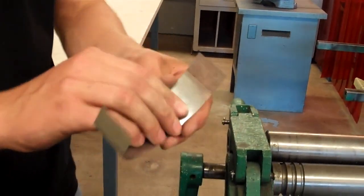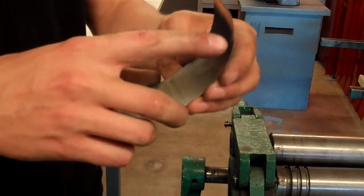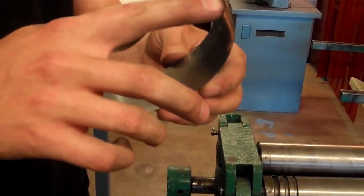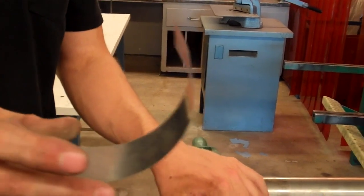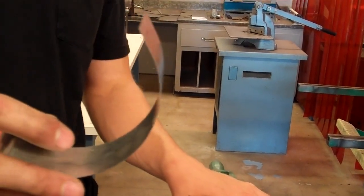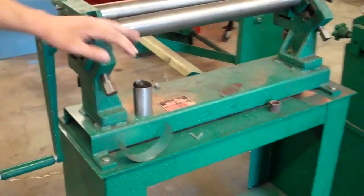Now, you can see on the end of this, we have a little bit of a flat right where it started the roll. And you're never going to be able to get rid of that. You're always going to have something of a flat at the very end of the part.